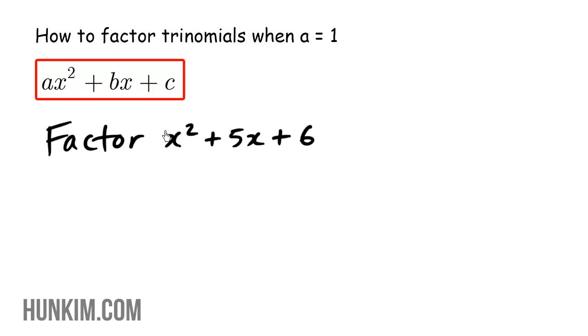This a value is actually one, and that's why we write how to factor trinomials when a equals one. But that's taken for granted. So a here is one, b is five, and the c value here is six.